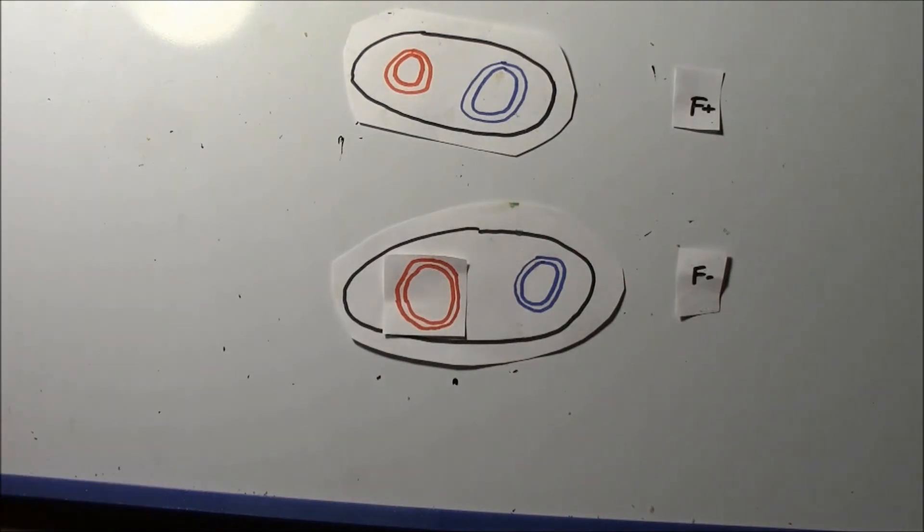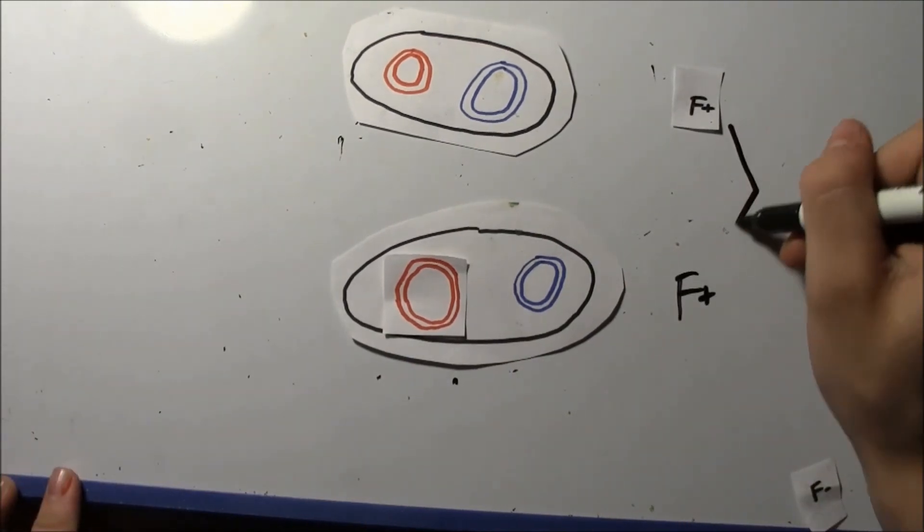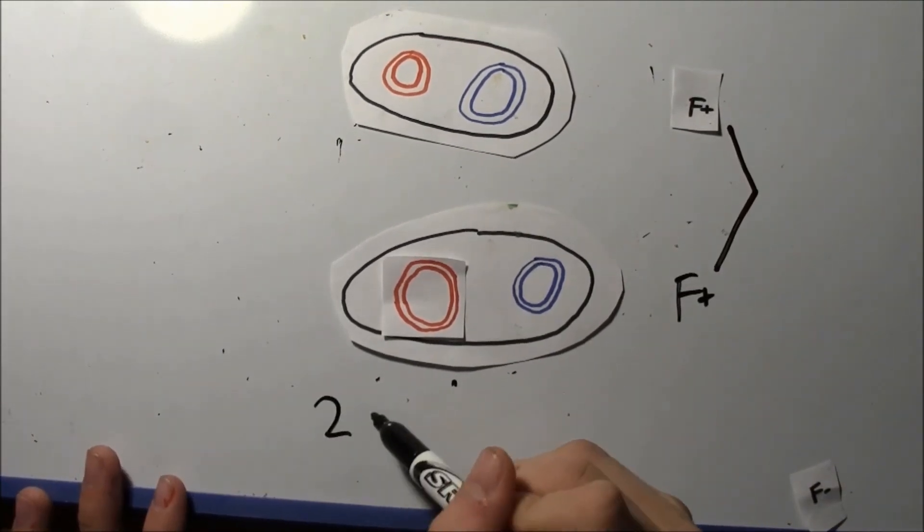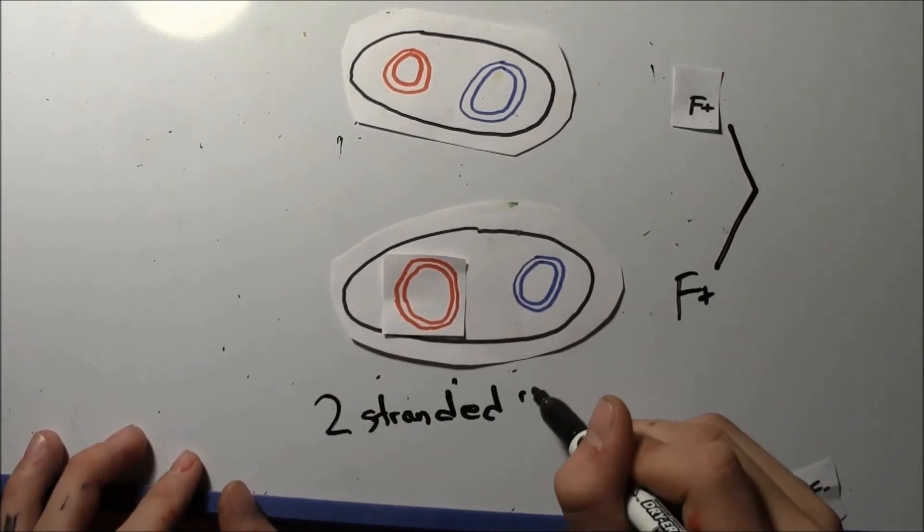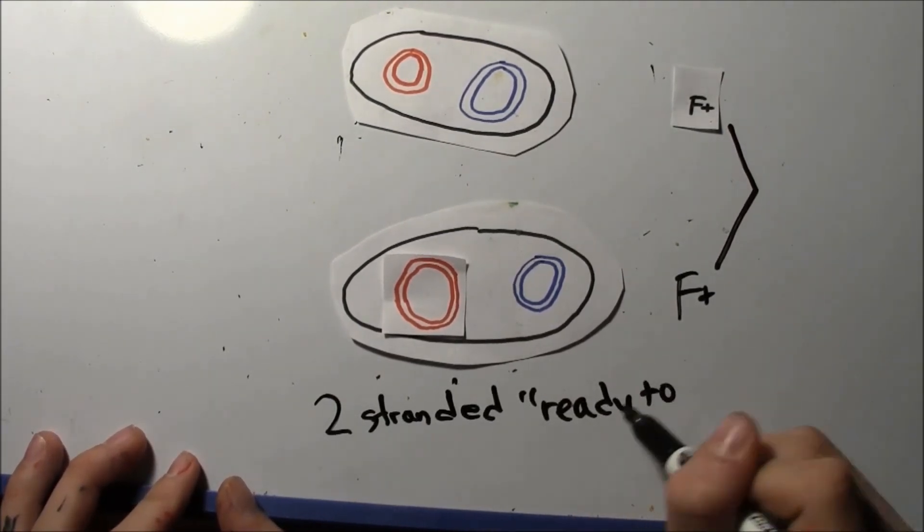DNA polymerase also copies the original F-plus plasmid, and the pilus is released from the now-conjugated bacterial cells, which results in two F-plus donor cells that are single and ready to mingle.